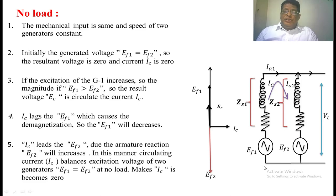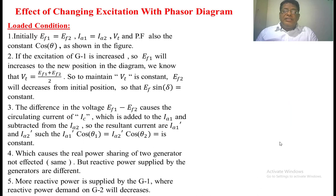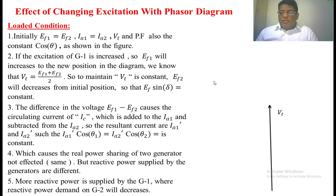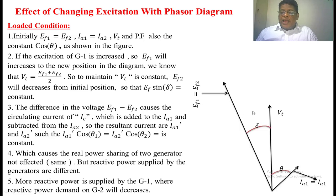Finally, the circulating current will decrease. This will change the excitation effect of either generator. Now, if we come to the loaded condition — initially we assume that EF1 equals EF2, I1 equals I2, and VT and power factor of both generators are constant. EF1 and EF2 are equal, and the angle between VT and EF1 is delta. The angle between VT and I1 equal to I2 is phi.